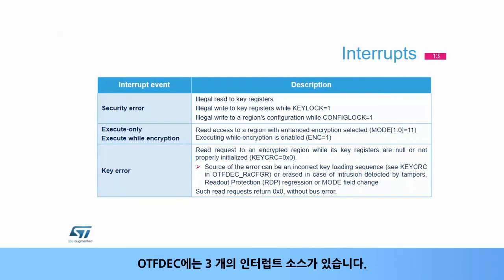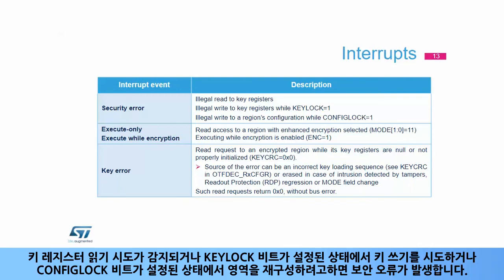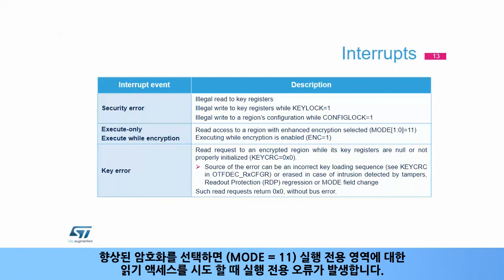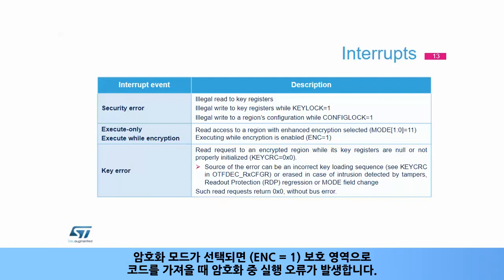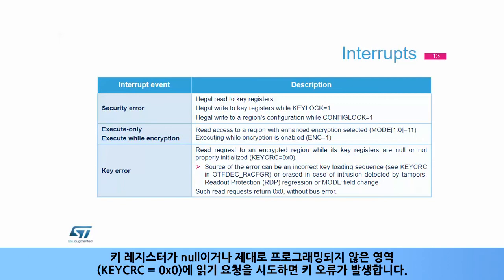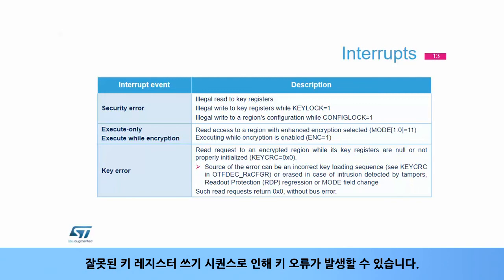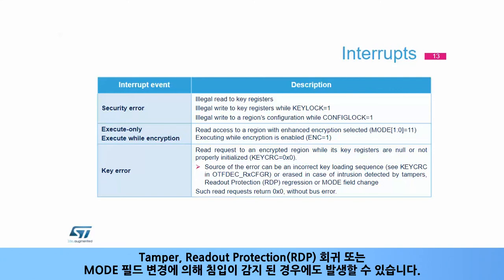The OTF-DEC has three interrupt sources. The security error is raised when an attempt to read key registers is detected, when an attempt to write keys while the key lock bit is set, or when an attempt to reconfigure a region while the config lock bit is set. When enhanced encryption is selected (mode equals 1-1), the execute-only error is raised when a read access to an execute-only region is attempted. When encryption mode is selected (ENC equals 1), the execute-while-encryption error is raised when code is fetched to any protected region. The key error is raised when a read request is attempted to a region whose key registers are null or not properly programmed (key CRC equals 0). Key error can occur due to incorrect key register writing sequence, intrusion detected by tampers, readout protection regression, or mode field change.